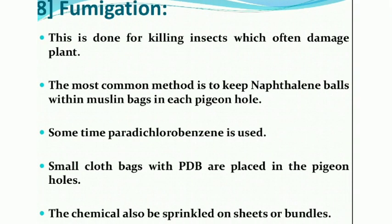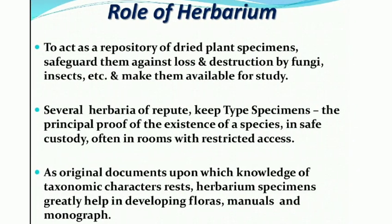One more step is fumigation, done for killing insects which often damage the plant. After storage, we release some smoke in the chamber. The most common method is to keep naphthalene balls within muslin bags in each pigeon hole — the naphthalene balls release a smell so that fungus and bacteria will not grow there. Sometimes, paradichlorobenzene (PDB) is used — small cloth bags with PDB are placed in the pigeon holes. This chemical can also be sprinkled on the sheets or bundles to prevent the attack of bacteria and fungus.